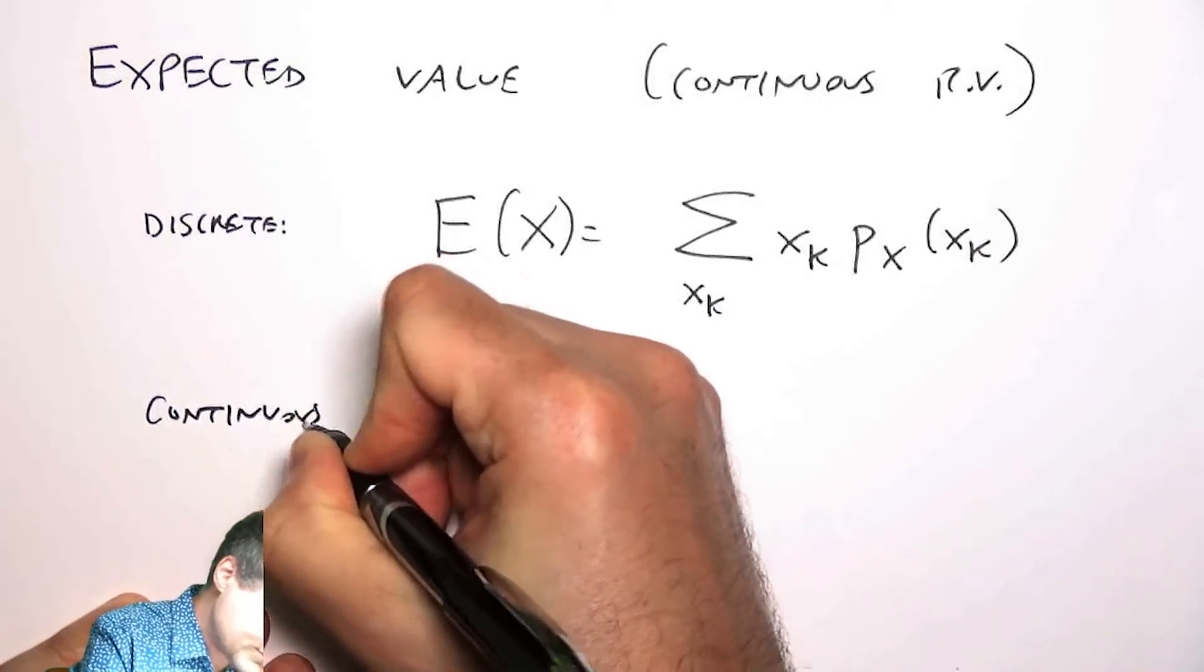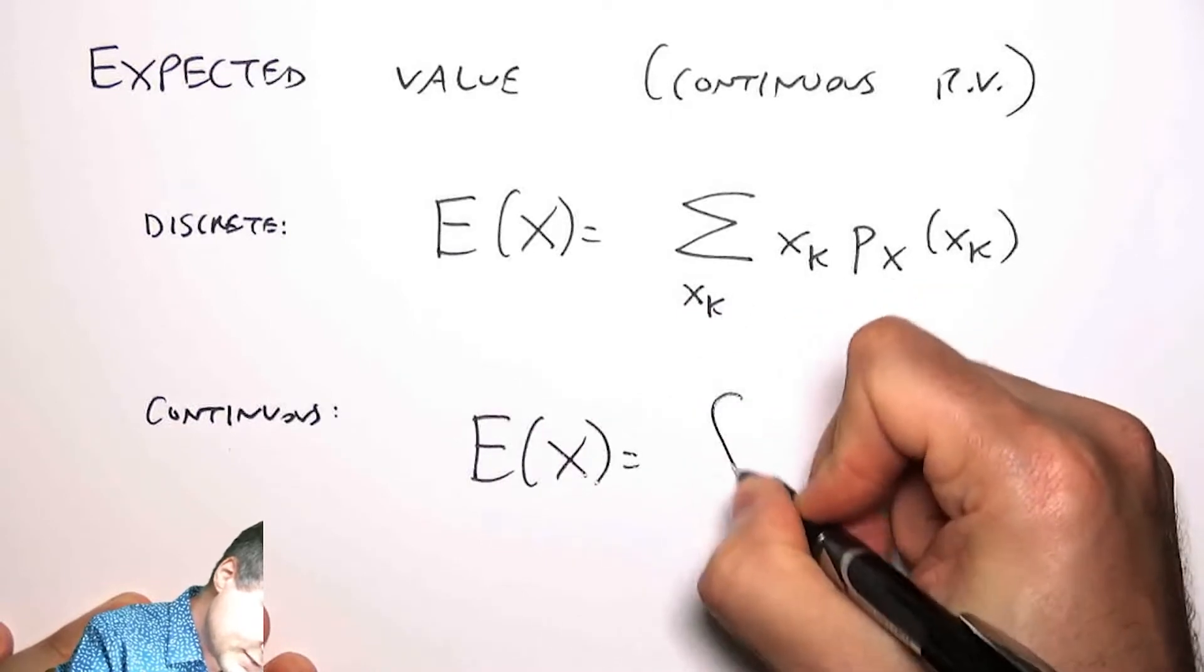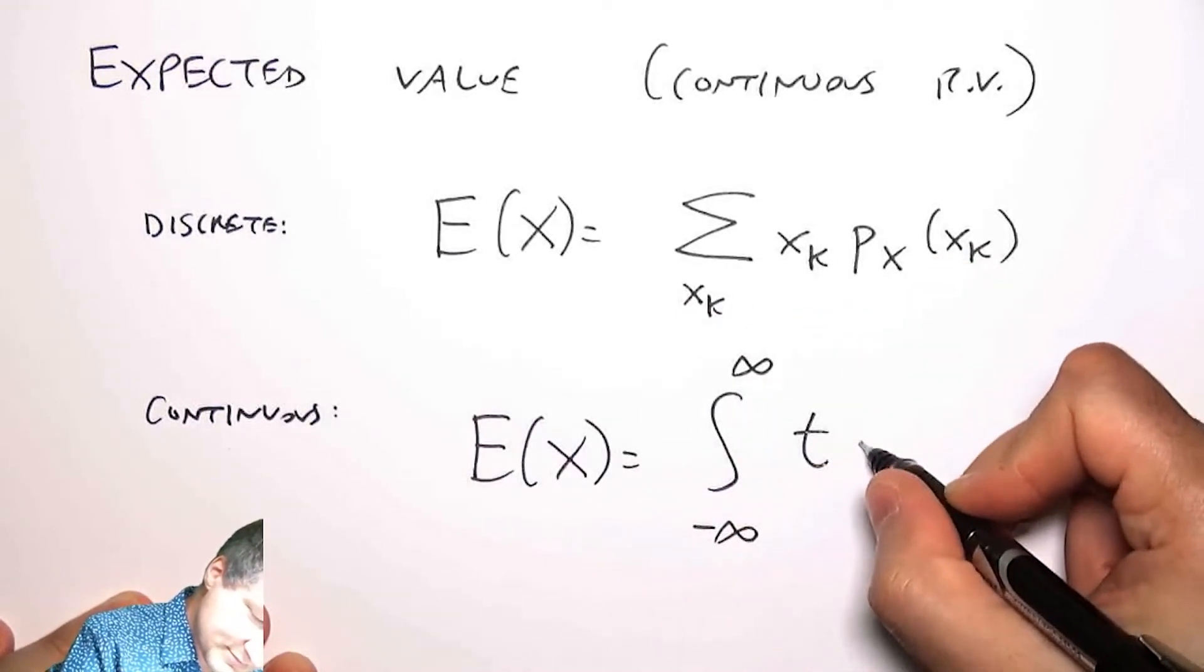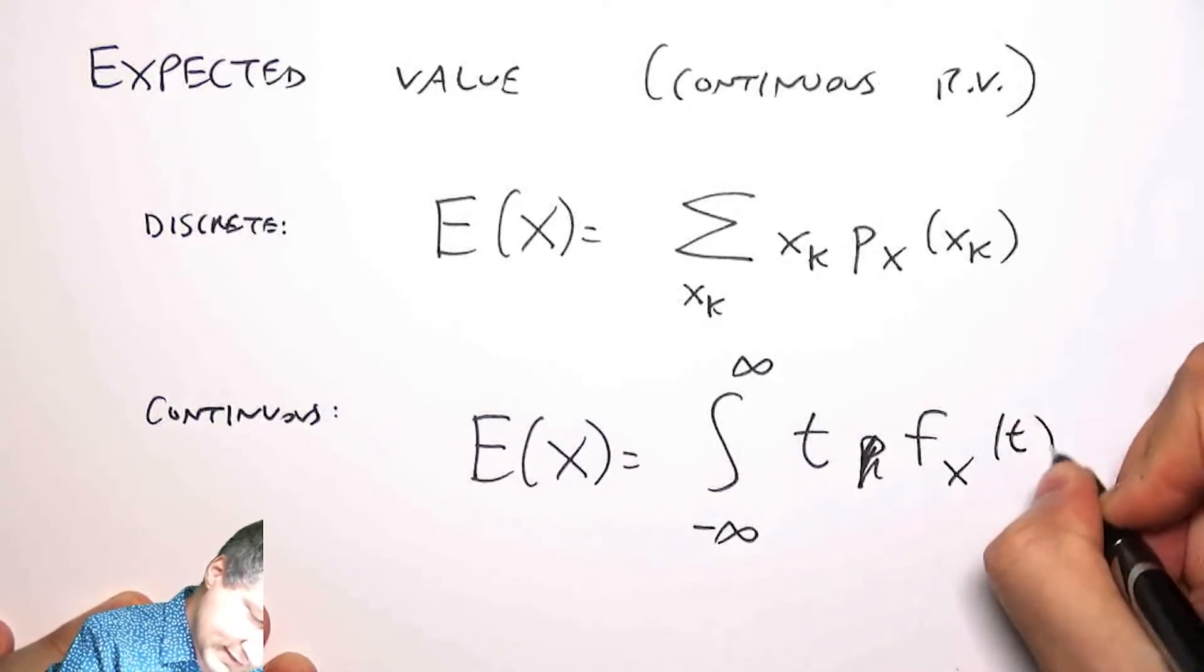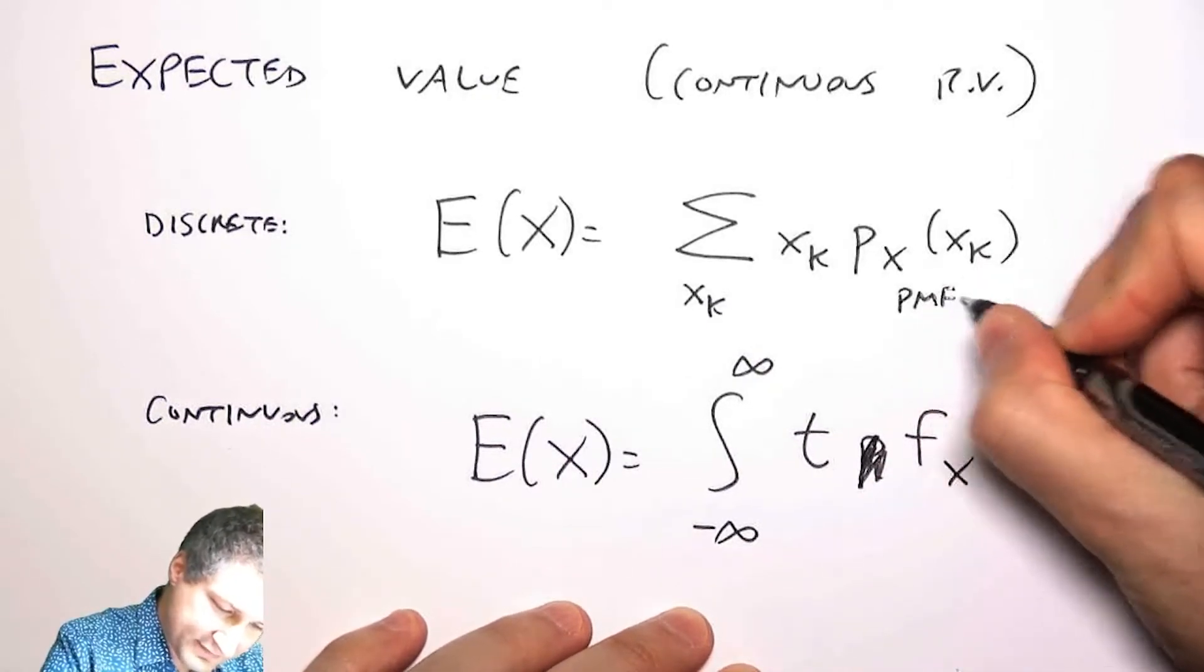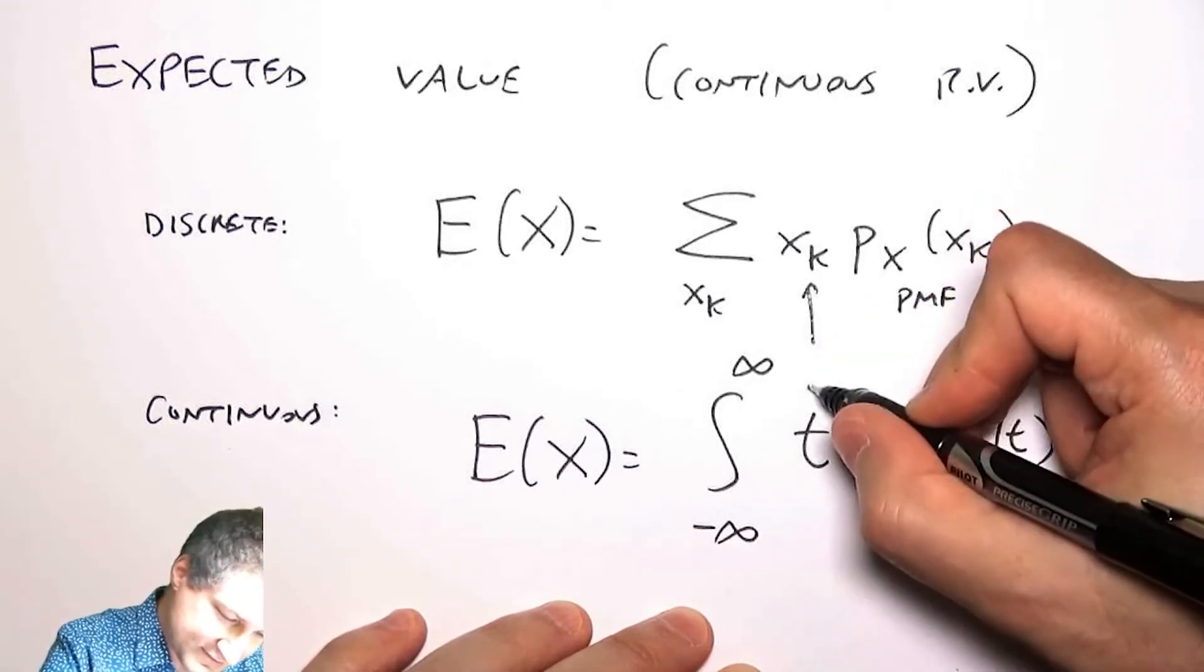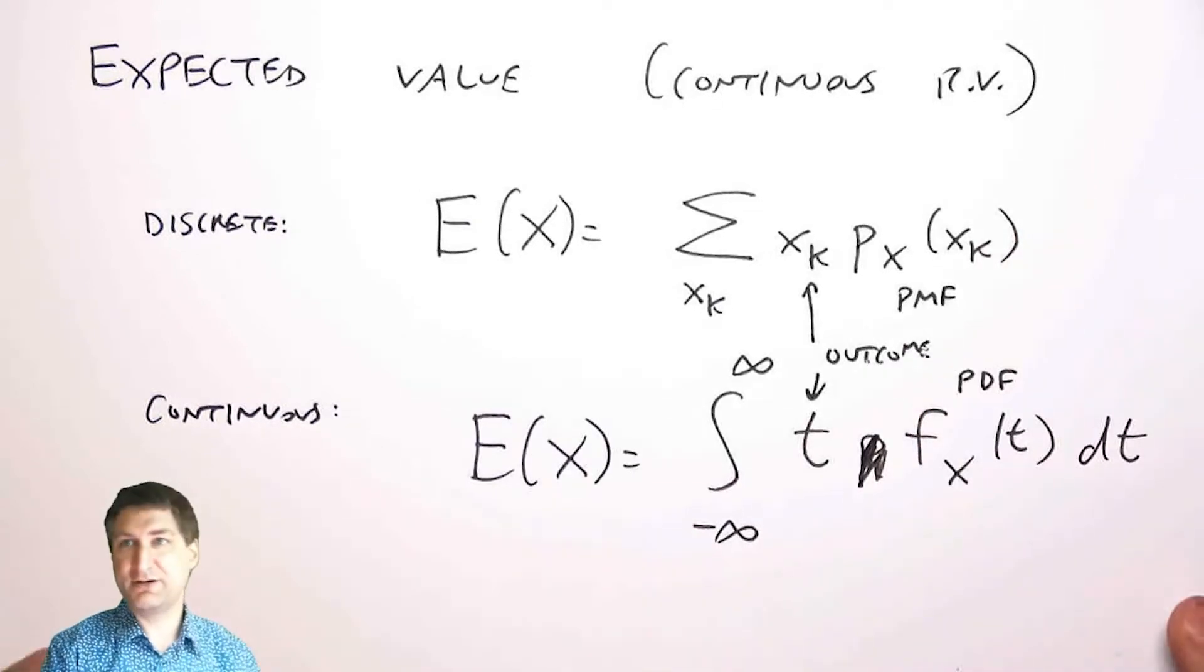So the definition in the continuous world is the expected value is an integral over all the possible outcomes, and now I'm multiplying this by the PDF and integrating dt. So here this was a PMF, this is a PDF, and then each of these things is basically the value of an outcome.